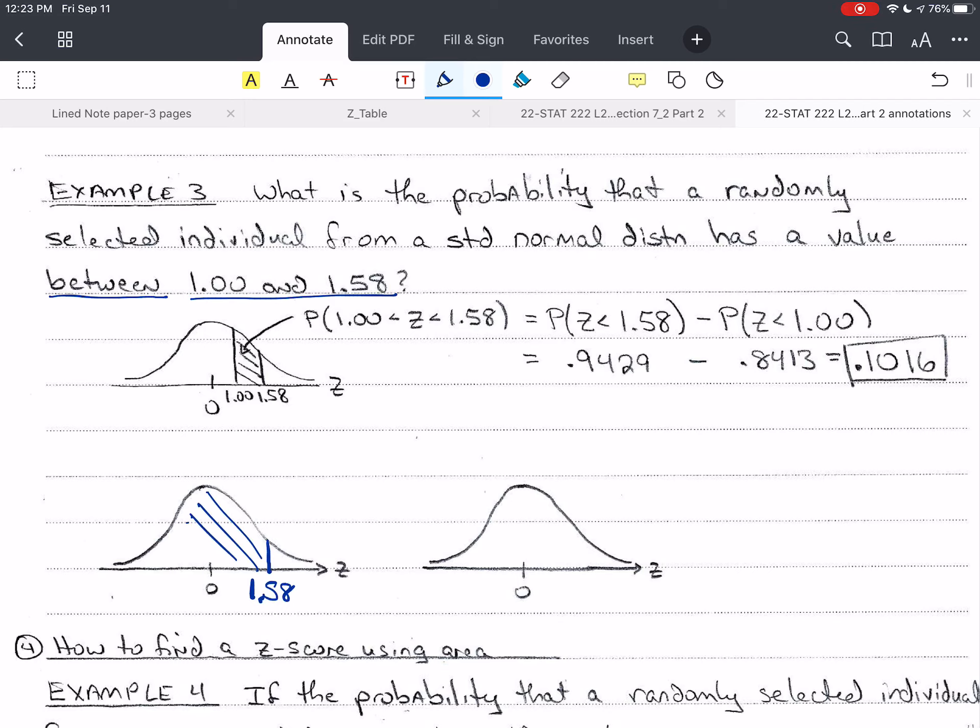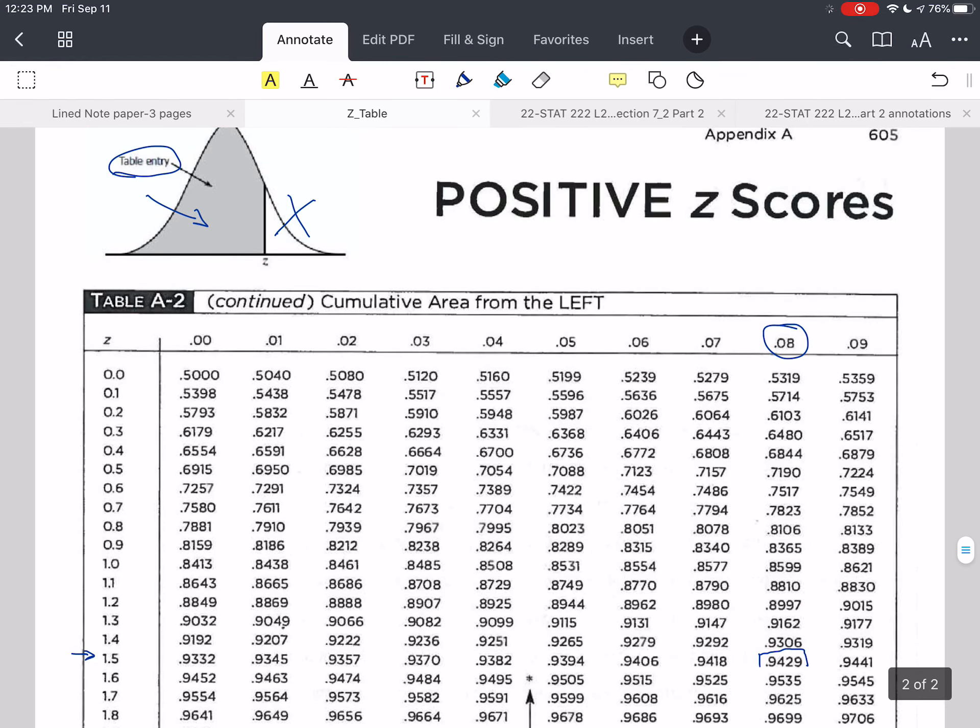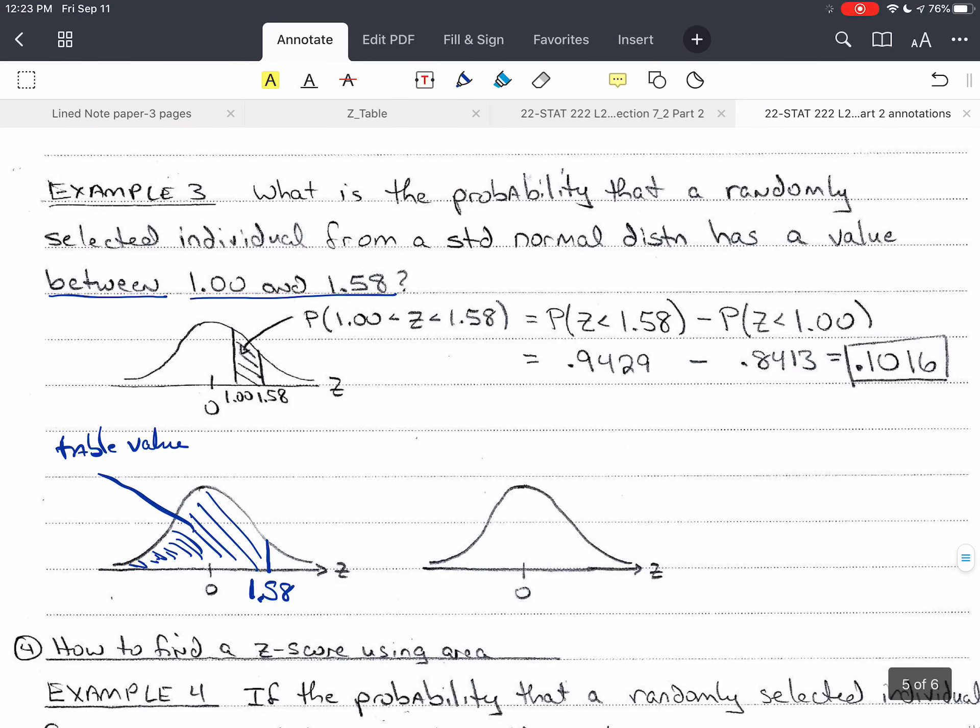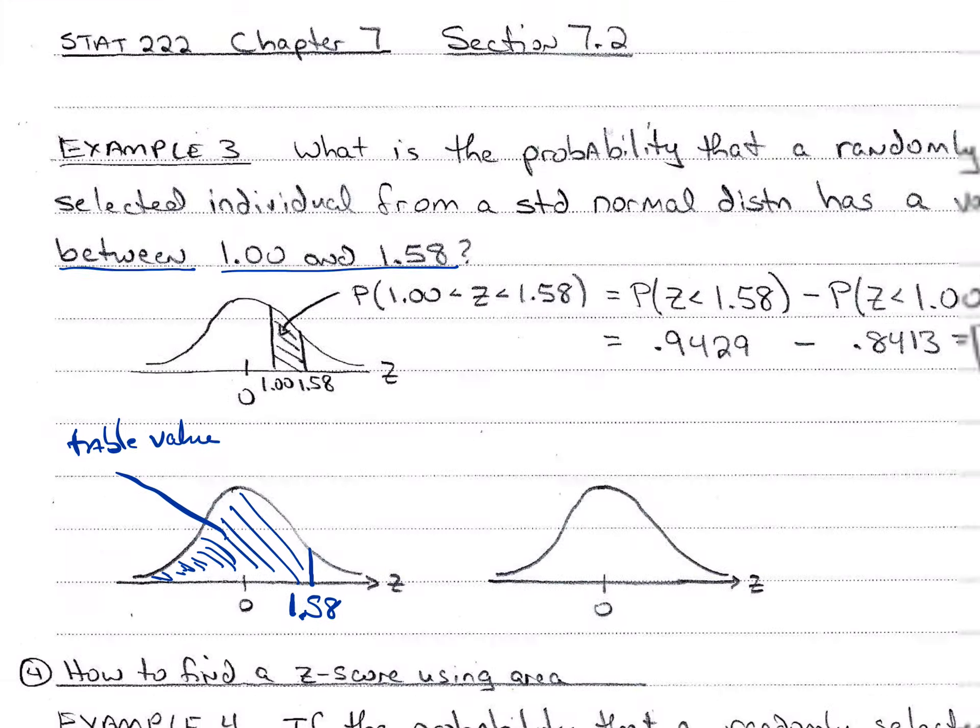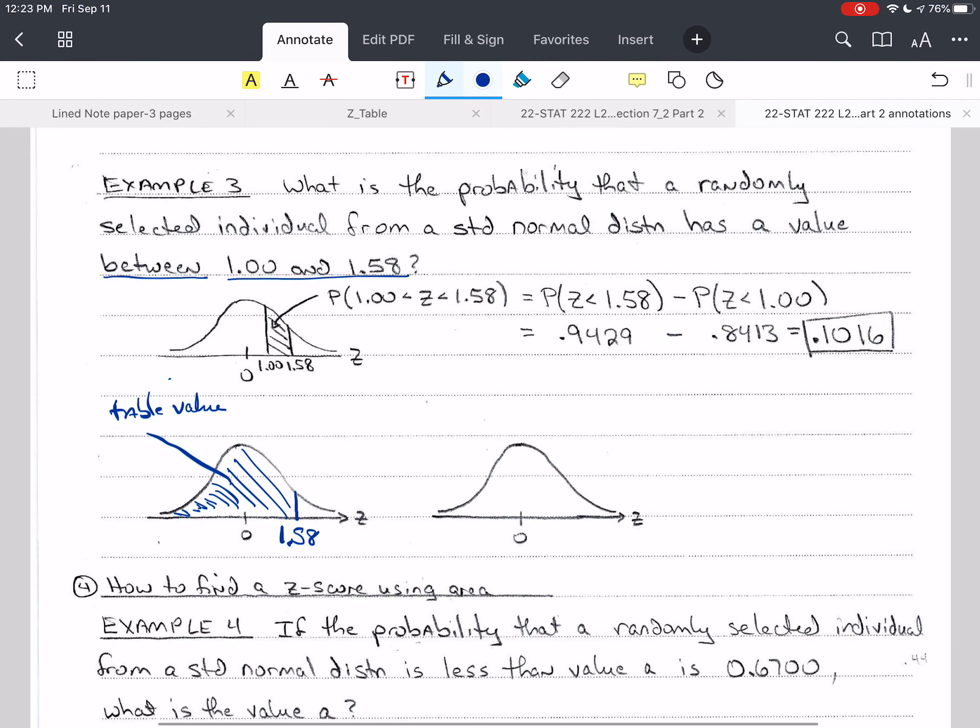And if I look up that value, the table value, it will be over here. And we just did that, but let's look at it again. So in this z table, we go down to 1.5 over here. And we go all the way across until we get to 0.08 here. And where they intersect, that's the value. So 0.9429. So this is 0.9429.